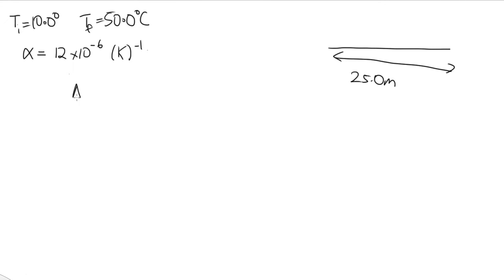The equation we use: the change in length of this section of highway is given by alpha times the initial length of the highway times the change in temperature.